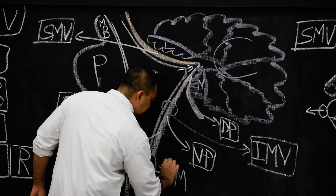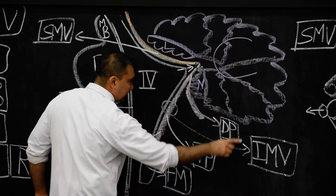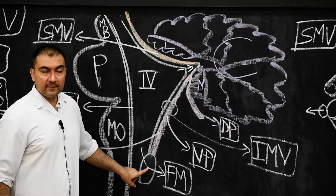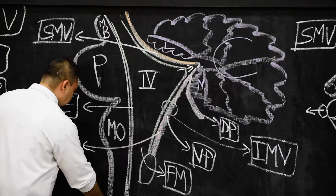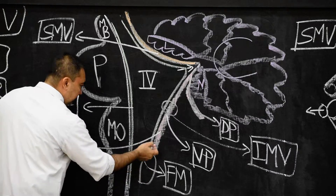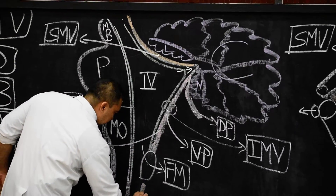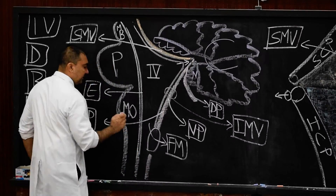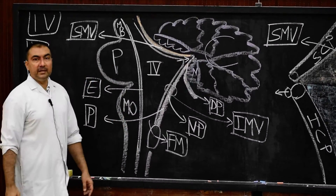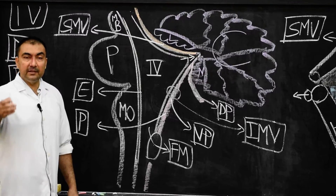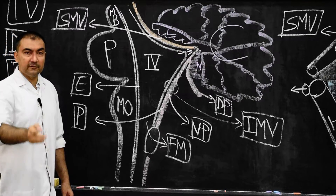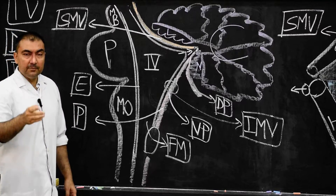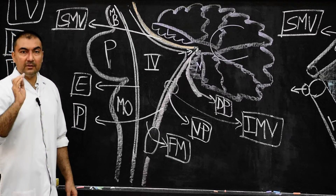This space, which I have already discussed in the previous diagram, is the foramen of Magendie in the lower part of the roof. Below that, once again, this pia matter will continue — it will continue lining the medulla oblongata, as the pia matter of the dorsal part of the medulla oblongata.